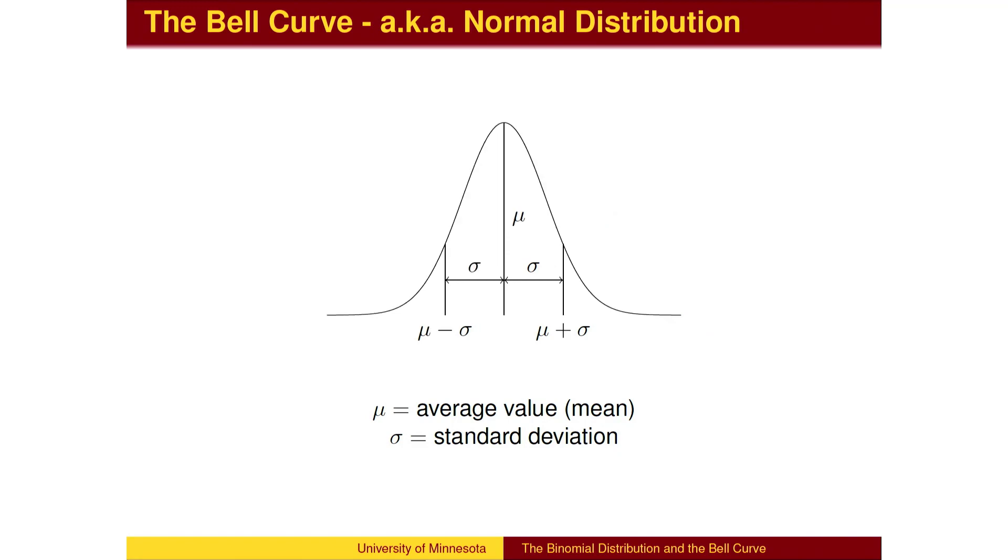It is possible for two bell curves to have the same mean, but to be different because one has a smaller standard deviation, making the bell thinner.